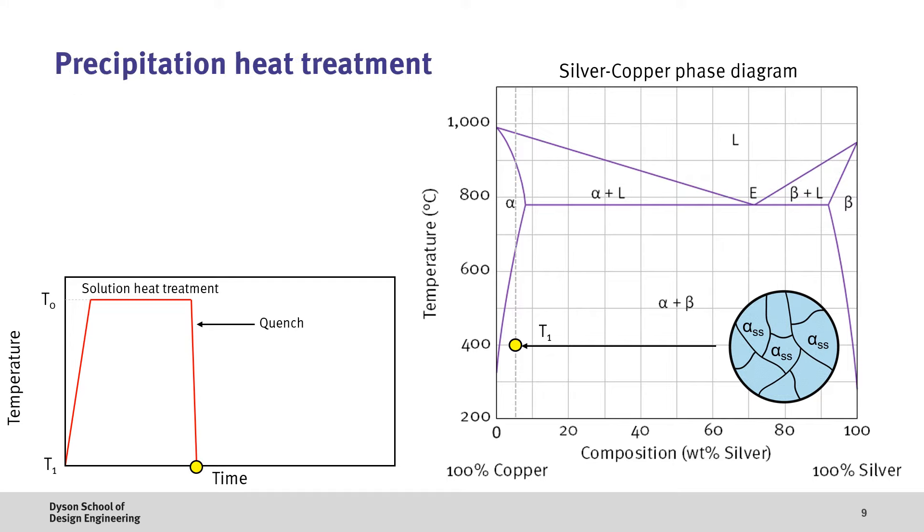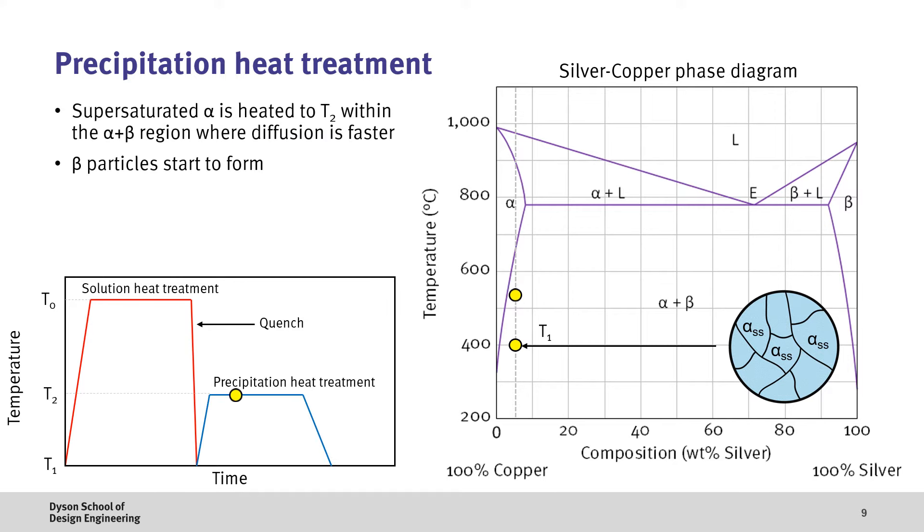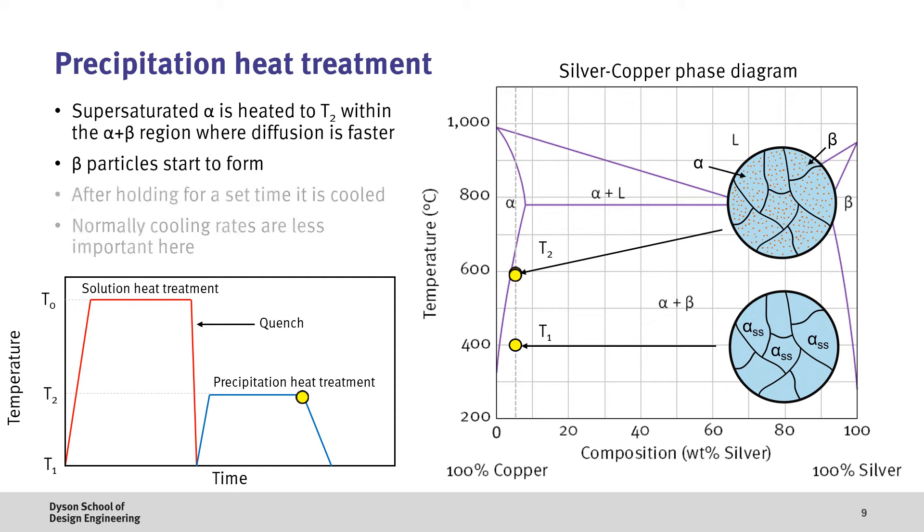Now, in the next stage, we have the precipitation heat treatment process. Here, the supersaturated alpha is heated to T2, which is still in the alpha plus beta region, but at the higher temperature, diffusion happens faster and the beta particles can start to form more rapidly. After holding the material at T2 for a set amount of time, it's then cooled to lock in the structure. At this point, the cooling rates are less important, but doing so faster allows for the desired structure to be locked in. Now, at this stage, the material's microstructure consists of grains of alpha with small precipitates of beta, and given that this is a metastable state, there's often significant lattice strains, and the small precipitates help to further impede dislocation movement, and therefore this increases the strength of the material.